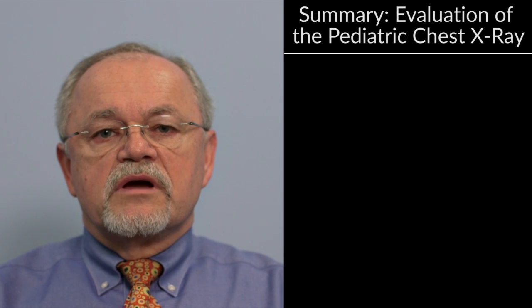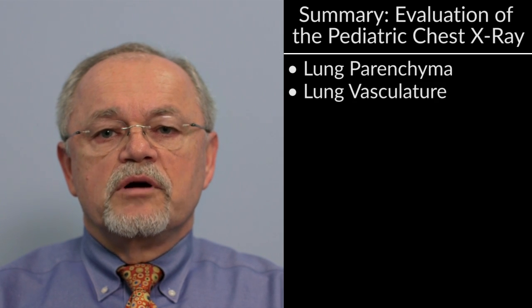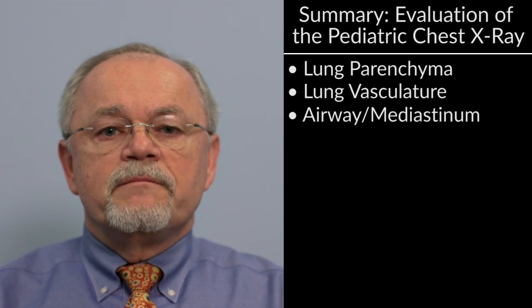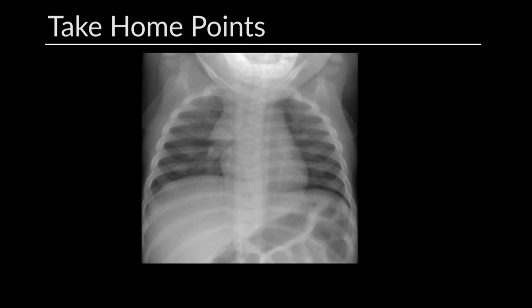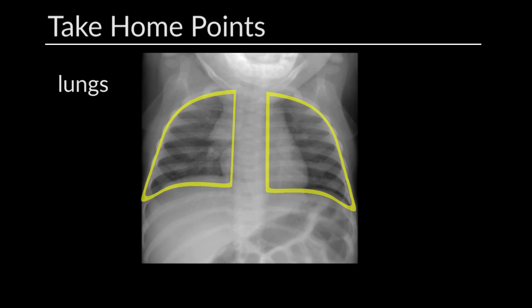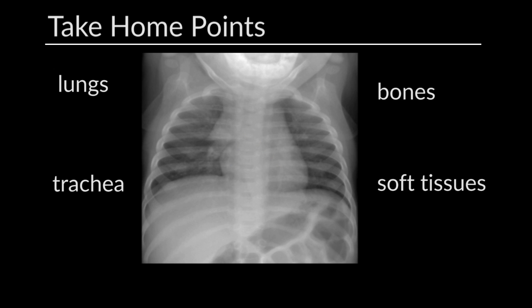We've covered a systematic approach to the chest in children: lung parenchyma, pulmonary vasculature, airway and mediastinum, heart, and bony abnormalities. Final take-home points: look at the symmetry of the lungs for density and pulmonary vascularity; look at the lung behind the heart because it's a favorite place for pneumonias to hide; check the size and position of the trachea, the bones, and soft tissues. Ask for help if you have any concerns at all. Thank you.